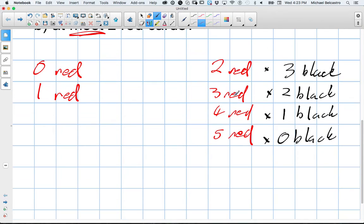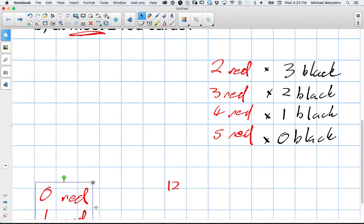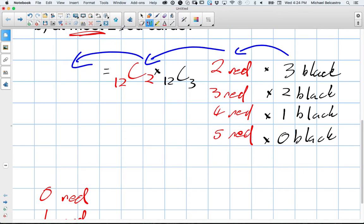So for our first combination, we know how many red cards there are. We know there's a total of 12. So how many different ways can we choose? And actually what I'll do is we'll line them up beside each other. We'll put the 12 up here. How many ways can we choose two cards out of 12? And then we need to multiply that by how many different ways can we choose three cards out of 12 for the black. So that's going to give us a value.